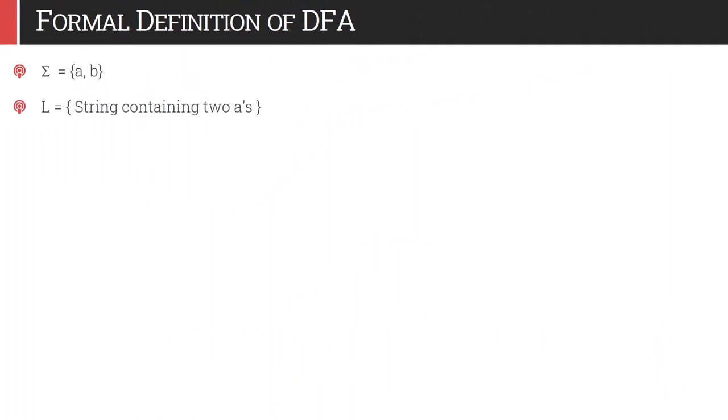Let's discuss the formal definition of DFA. Consider the alphabet sigma = {a, b}. Whatever language we derive will be based on these two alphabets only. So L is the set of strings containing exactly two a's. Sigma-star is the superset of all strings we can define over a and b, but our language is a set of strings with the restriction that every string must have exactly two a's.